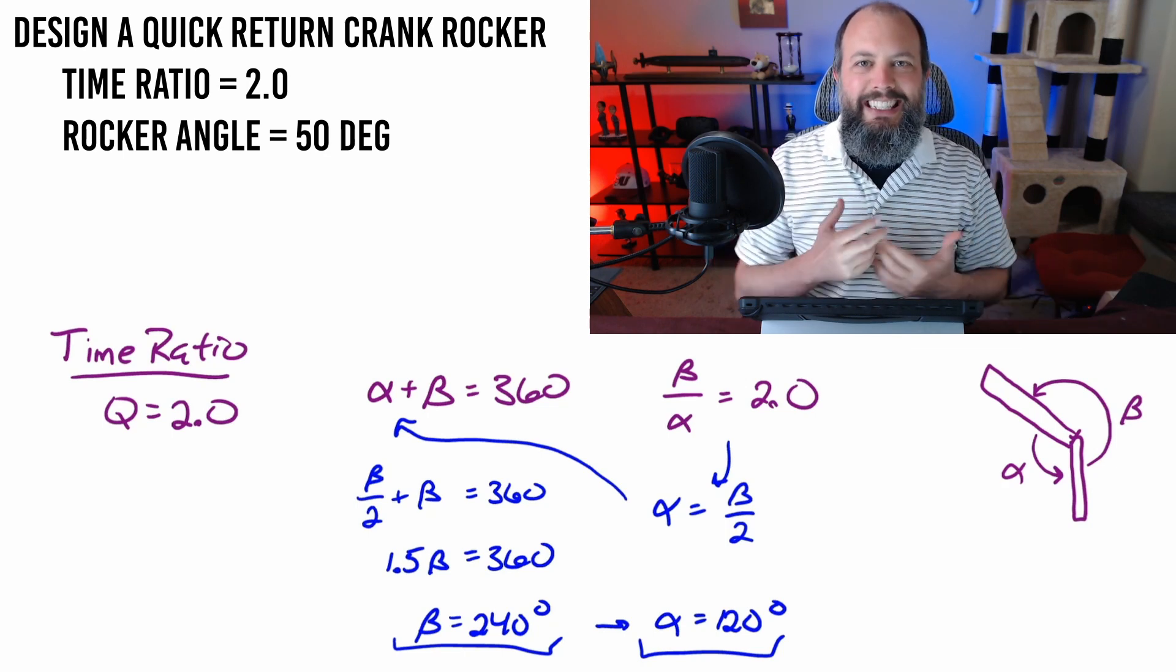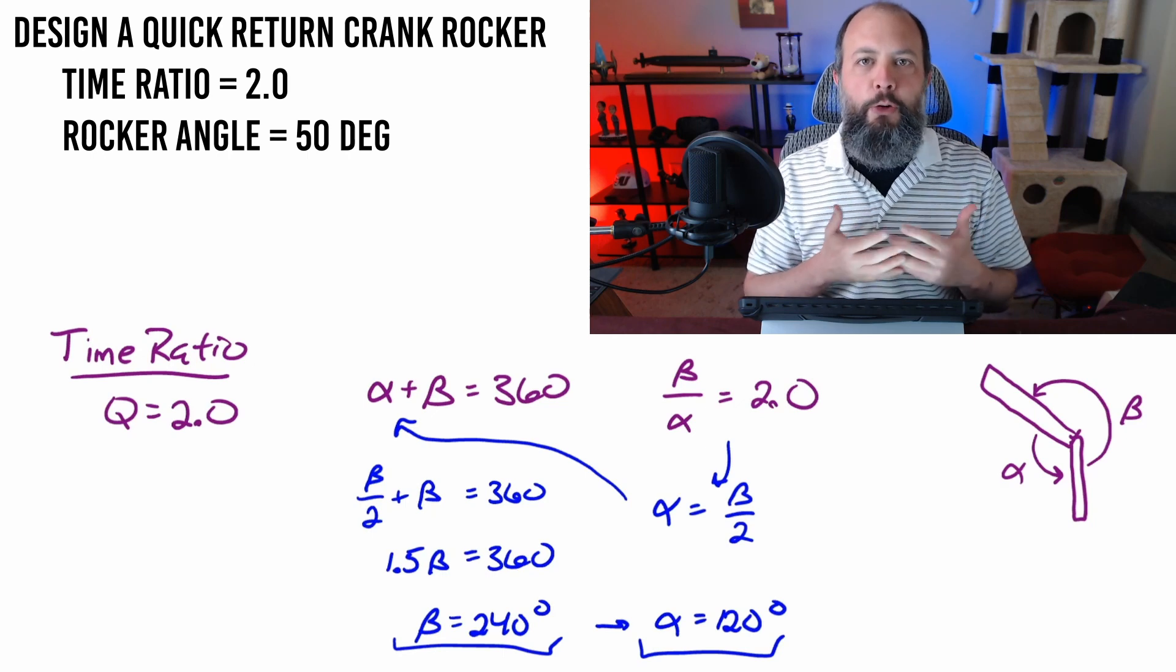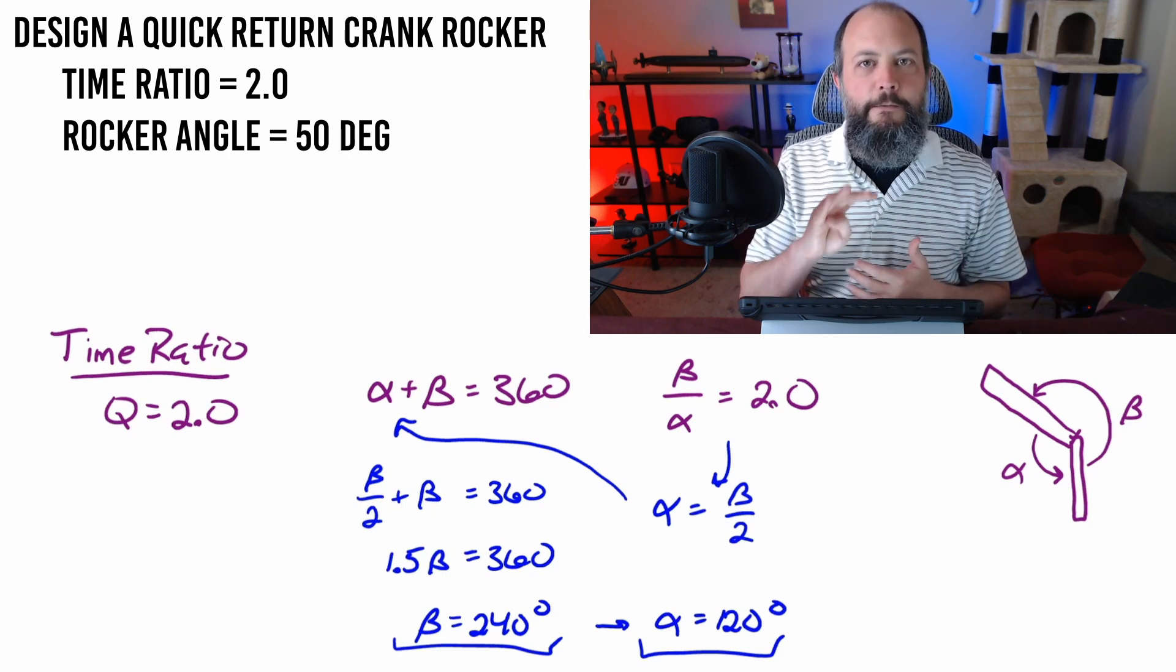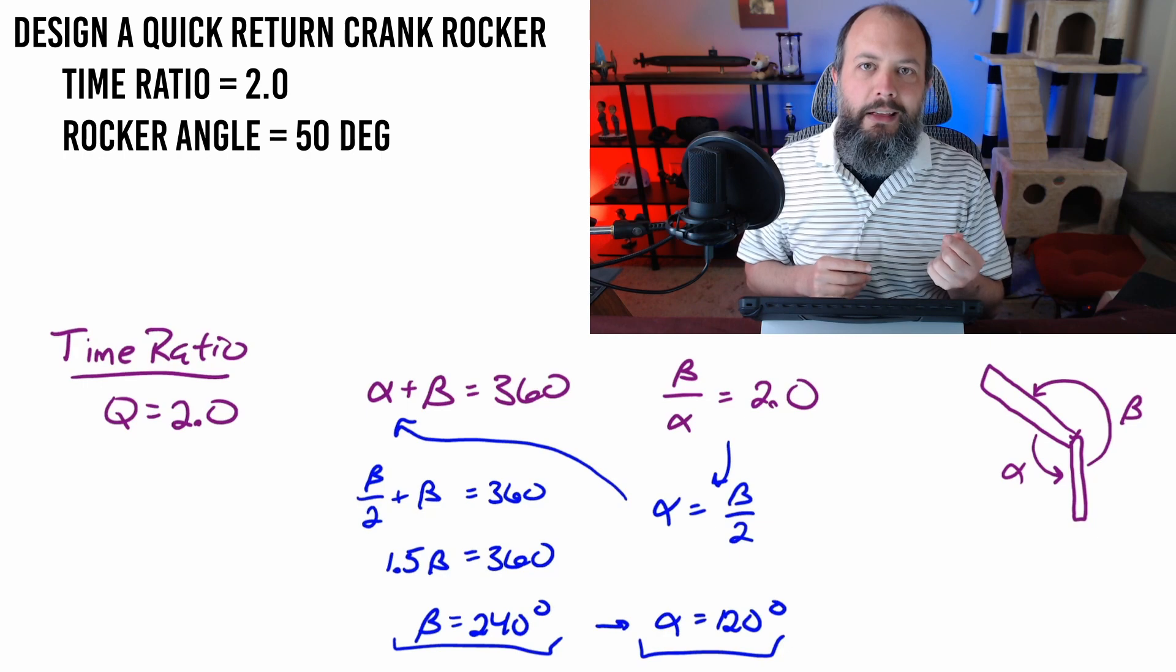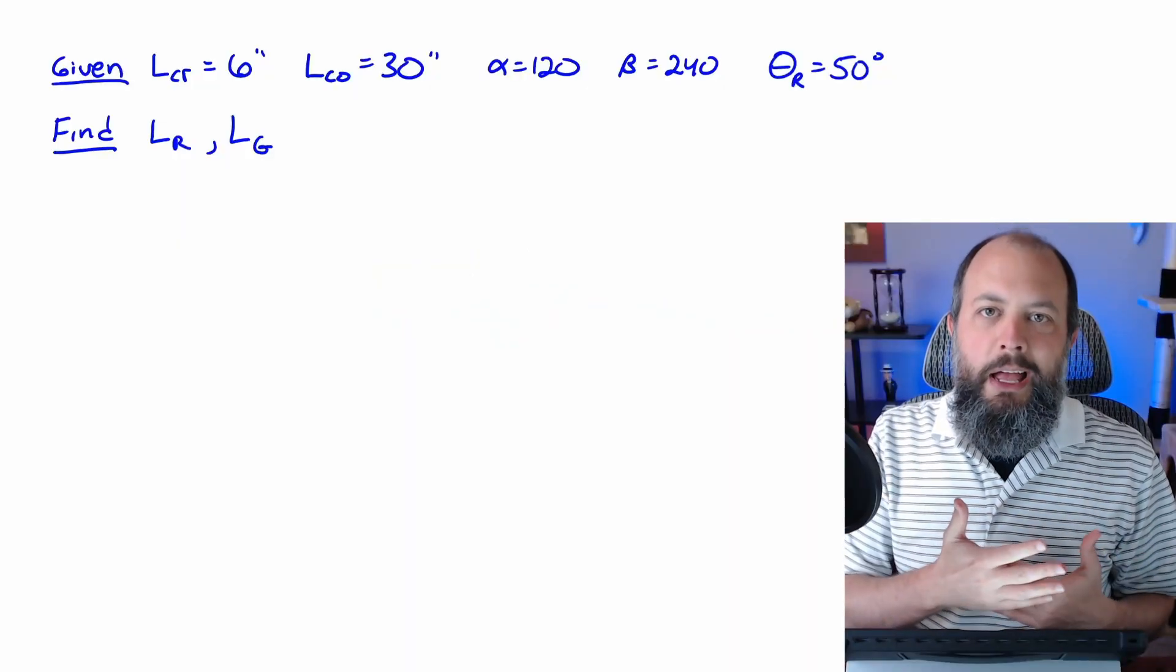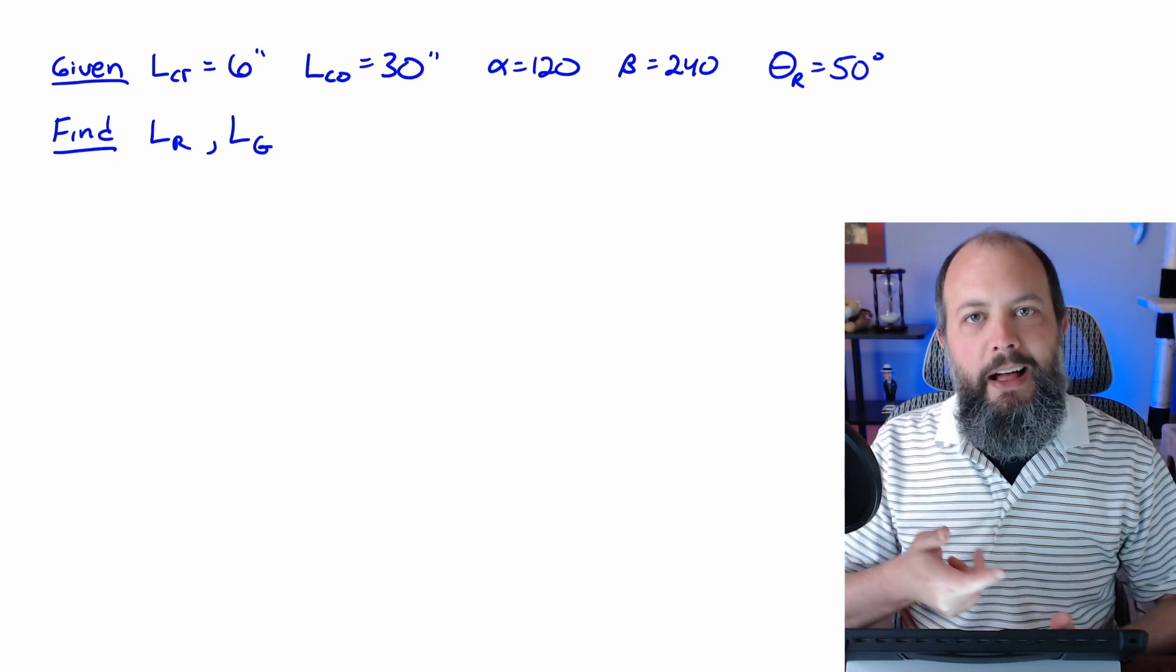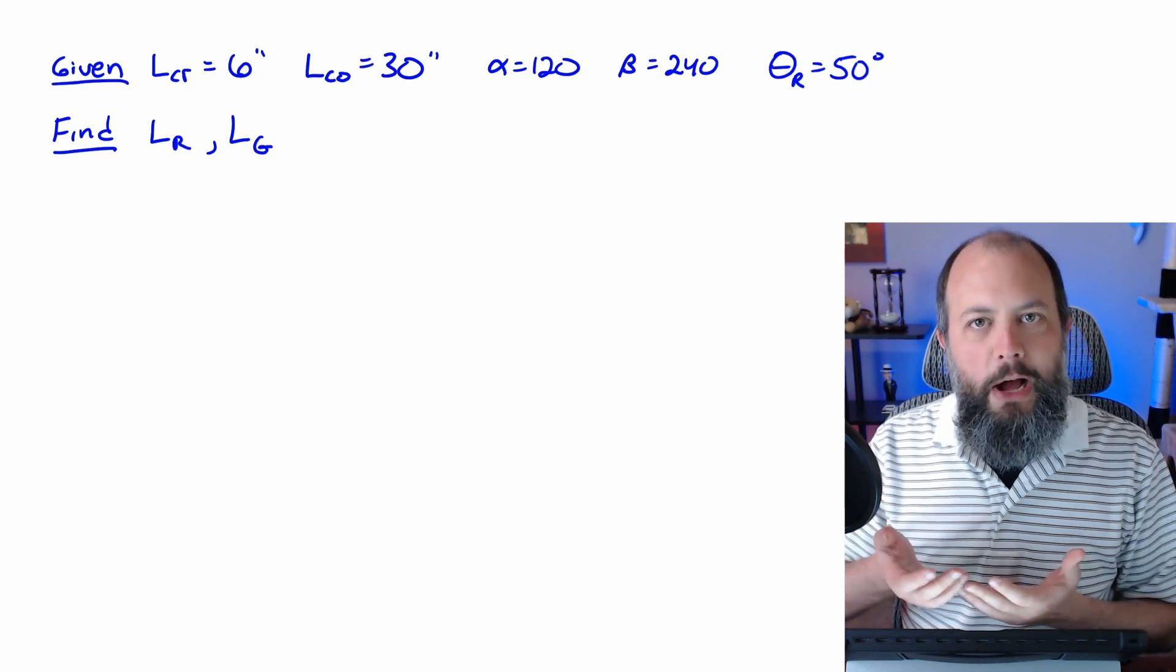Now the stated question: design a quick return crank rocker. That means you need to find the four lengths - length of the crank, coupler, rocker, and ground. It's probably going to be easiest to keep the crank and coupler at their current length, but you can adjust the rocker length pretty easily, and you can also adjust ground by adjusting where the rocker is attached. So we'll say we're starting with a six inch crank, 30 inch coupler, and we need to find the rocker length and ground length.